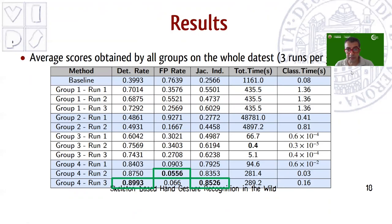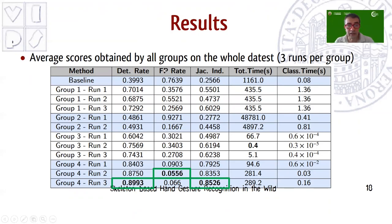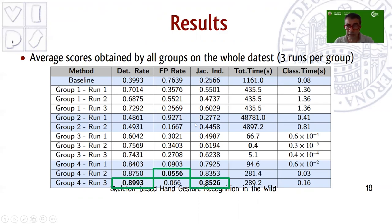The best results are clearly obtained by group four, although results from group three and group one are not bad. However, they are far from being usable in an online application, especially due to the high false positive rate, causing the methods to erroneously detect many gestures — which is not acceptable in a practical application. Most methods are fast enough to work in real-time, at least those from group three, the baseline, and group four.